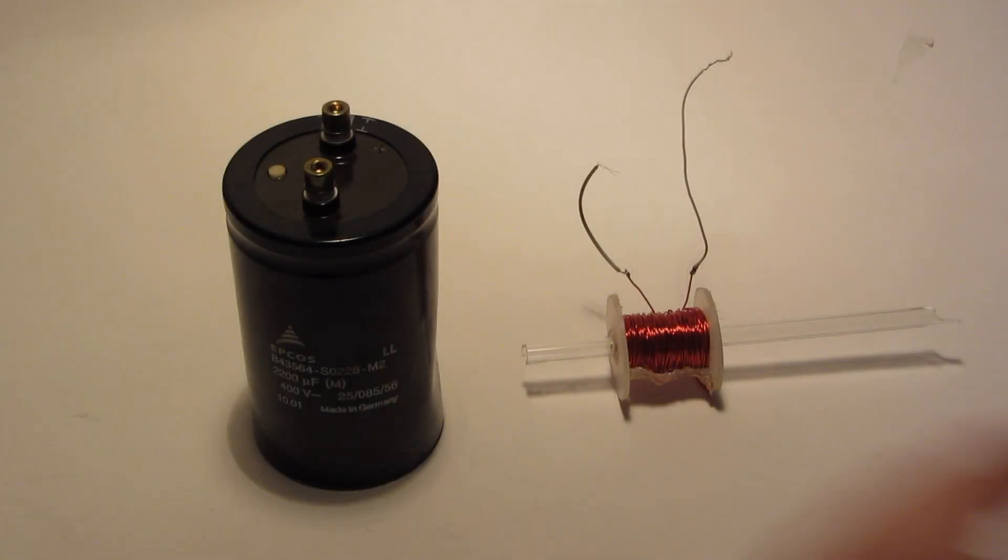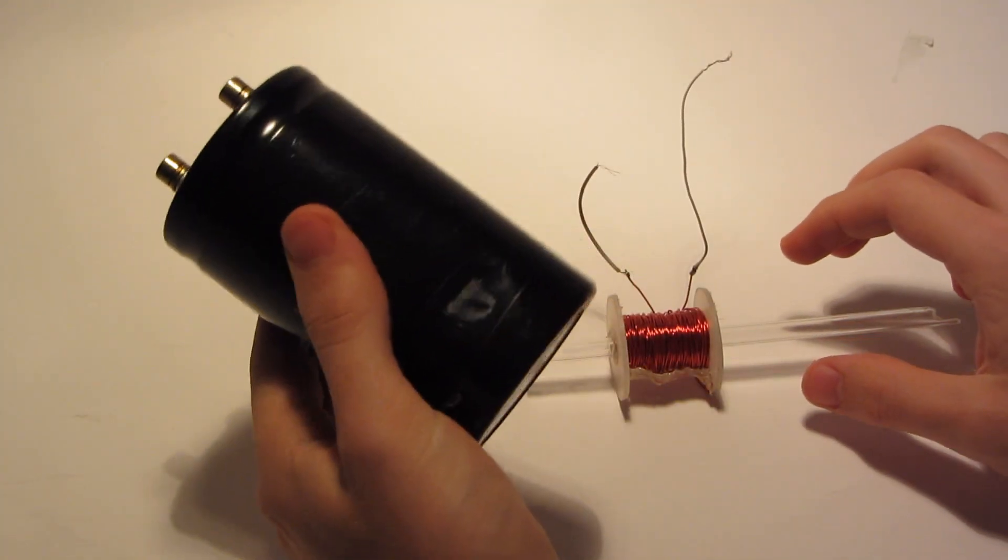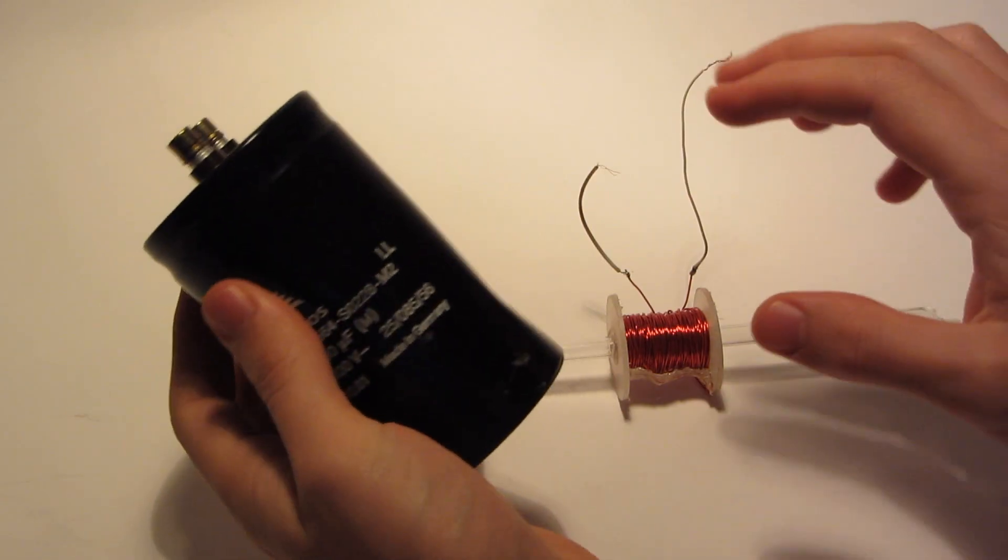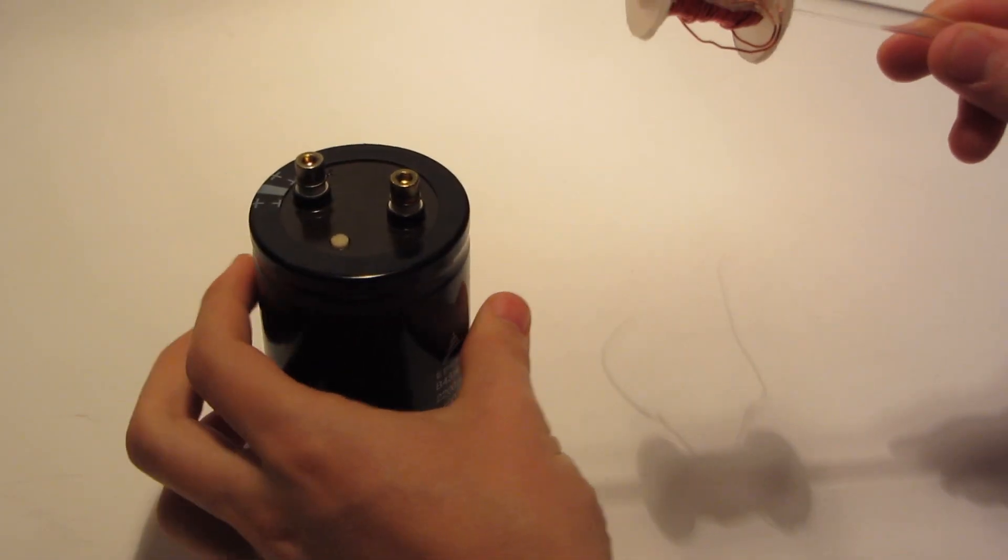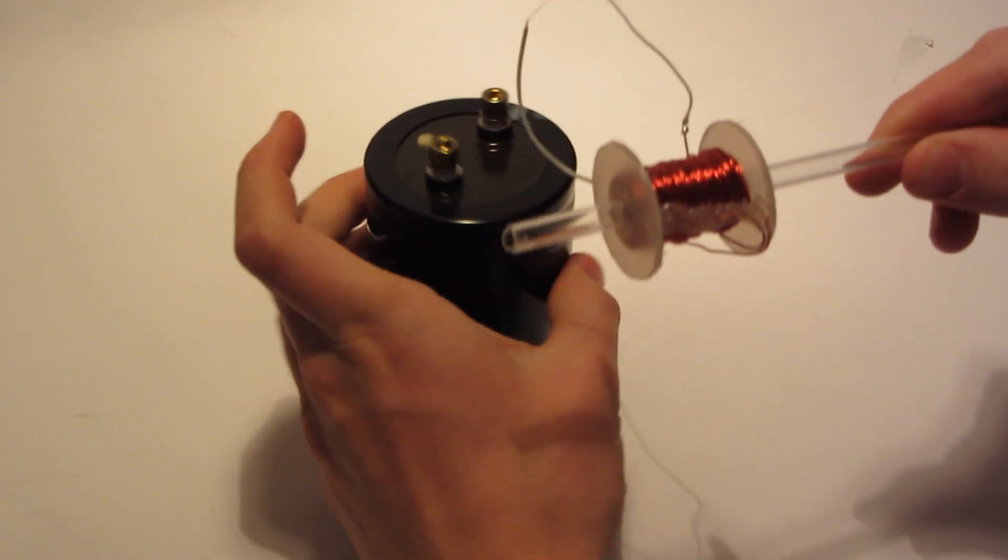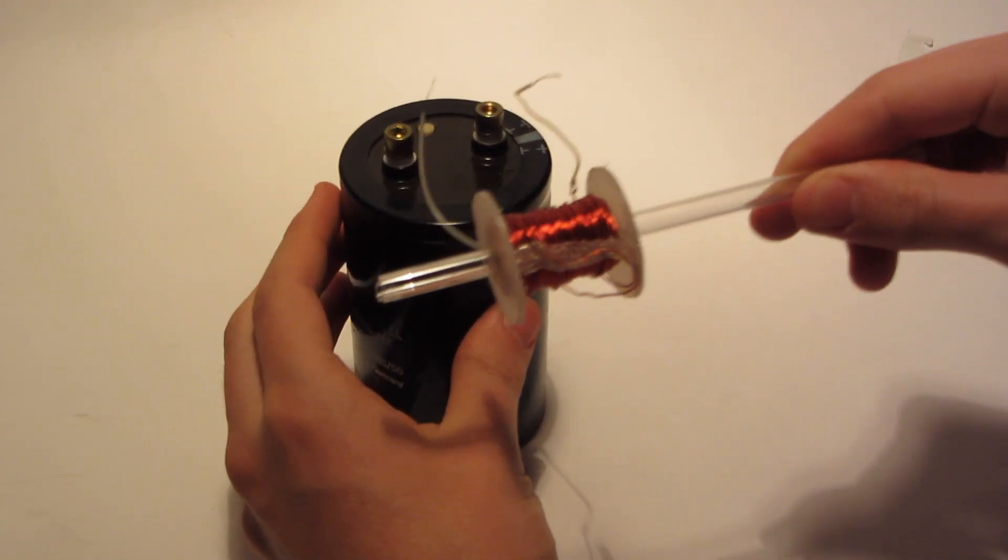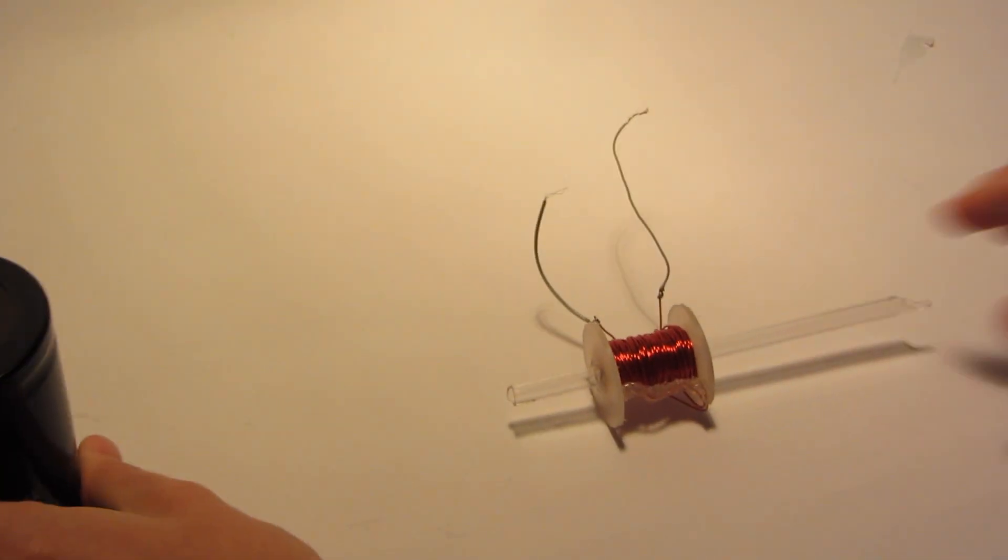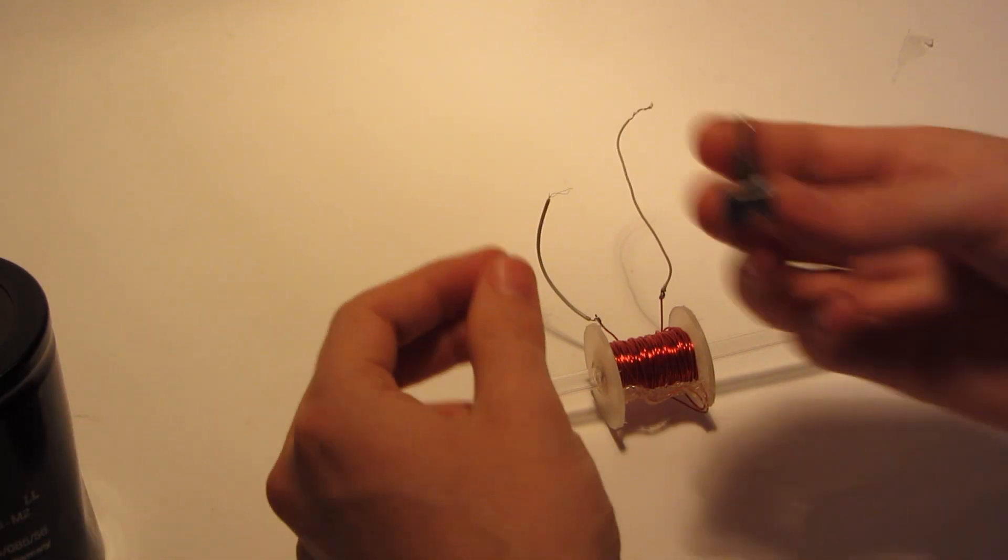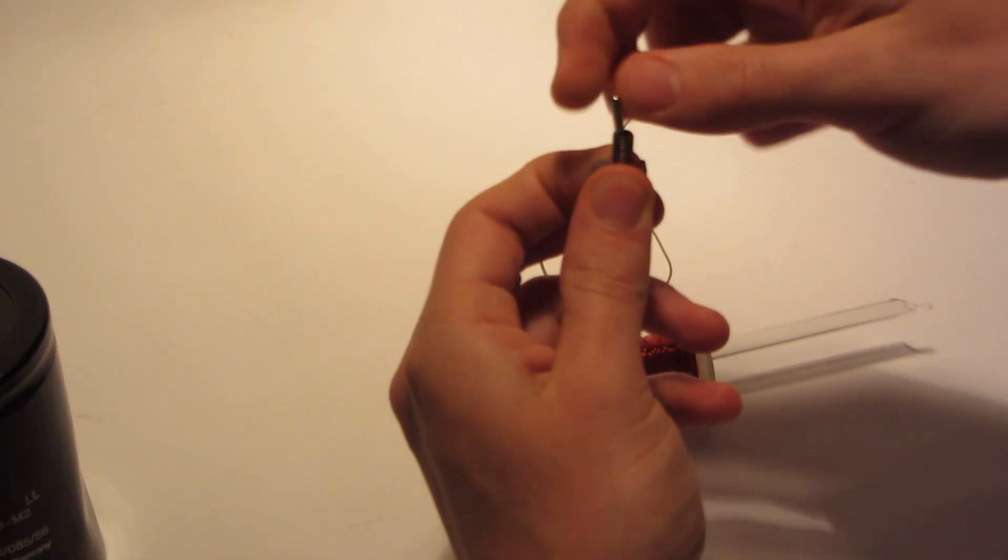Now we come to the tricky part: how do we get all the energy from the capacitor to the coil? It's almost as simple as connecting the wires to the capacitor, but most switches, like these little switches, they have a maximum amperage they can take.